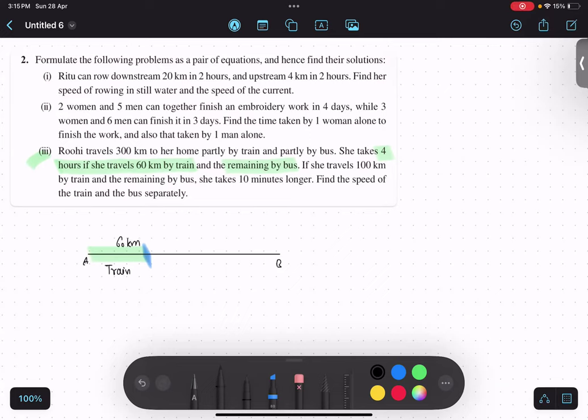So what will be the remaining journey? How much? 240, right. 240 kilometer by bus. You've got 300 in total. Yes. Now if she travels, now the question is, if that means this is the second question, if she travels 100 kilometer by train, the remaining by bus, she takes 10 minutes longer.